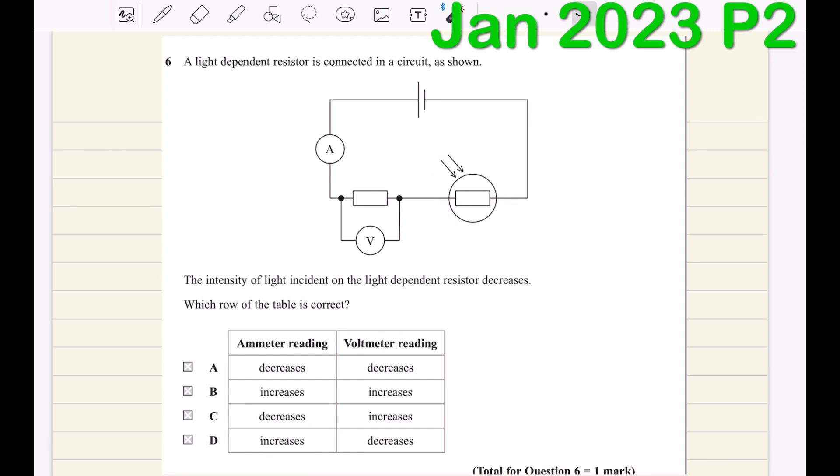So the voltage across the light-dependent resistor is going to be higher. There is a larger proportion of voltage across the light-dependent resistor. Keep in mind, if the resistance of the light-dependent resistor increases...